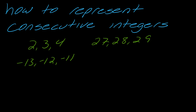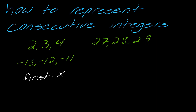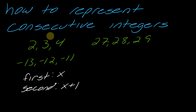Notice how consecutive integers increase. To get from 2 to 3, you just add one, and then to get from 3 to 4, you add another one. Same thing for 27 to 28 — you just keep adding one. So the idea with consecutive integer problems is you don't know what the first integer is, so you let x represent it. The second integer is represented by x plus 1. And if you have a third integer, you add another one, so the third integer is x plus 1 plus 1, which equals x plus 2.